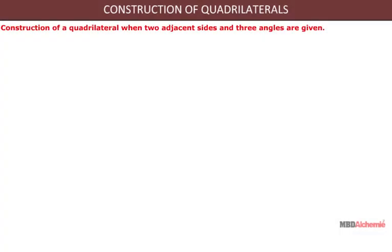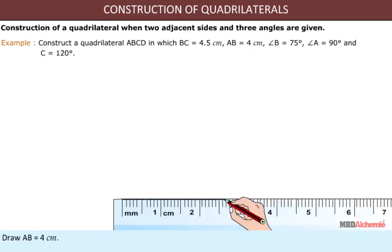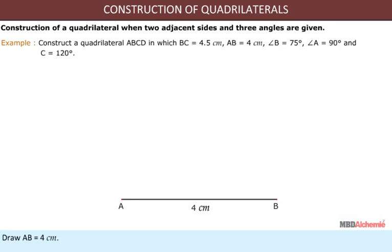Construction of a quadrilateral when two adjacent sides and three angles are given. Example: Construct a quadrilateral ABCD in which BC = 4.5 cm, AB = 4 cm, angle B = 75 degrees, angle A = 90 degrees, and angle C = 120 degrees. Solution: Draw AB = 4 cm.